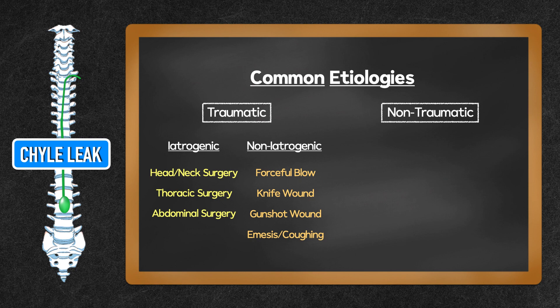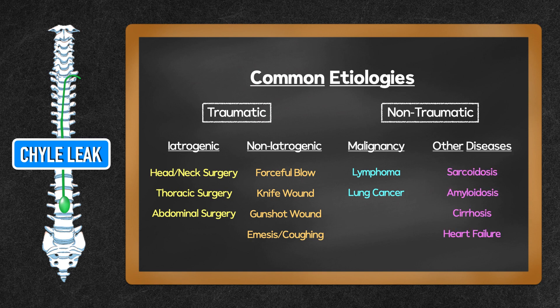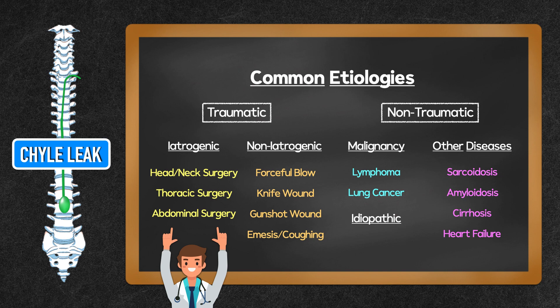Other causes are non-iatrogenic, like a forceful blow, knife wound, or gunshot wound to the chest or abdomen, and emesis or coughing. Under non-traumatic etiologies, there's malignancy such as lymphoma or lung cancer, other diseases like sarcoidosis, amyloidosis, cirrhosis, and heart failure, and cases that are idiopathic, meaning they have no known cause. As a clinical dietitian working in the acute care setting, I find a chyle leak happens most often as a post-operative complication of surgery.